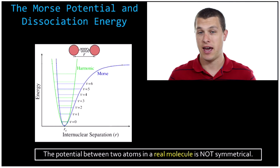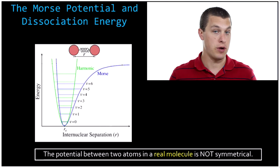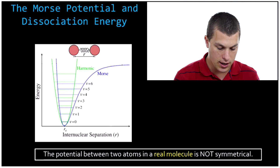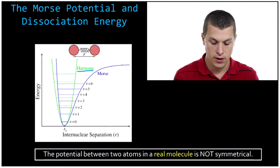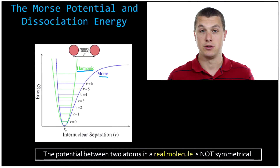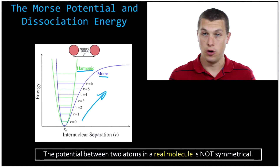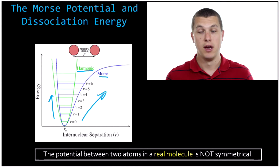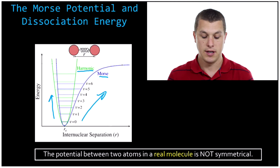The Morse potential takes into account this different potential to give us a more accurate prediction for the vibrations of our molecules. In the green here, you see the harmonic oscillator potential, and you can see it's totally symmetric — it's the same as I go to the left as when I go to the right. In the blue, you see the Morse potential, and as I go off to the right — pulling the atoms farther apart — it has a gentler slope. On the other hand, as I get the atoms closer together, it has a steeper slope, reflecting this difference between compressing the atoms together and pulling them apart.